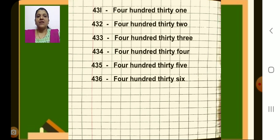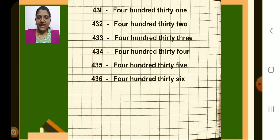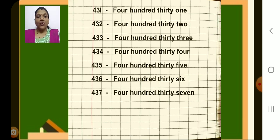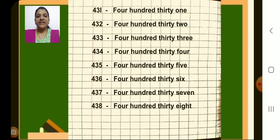Next number children, 436, put dash and write 436. Next 437, put a dash and write 437. Write slowly and carefully children. Next 438, dash, 438.